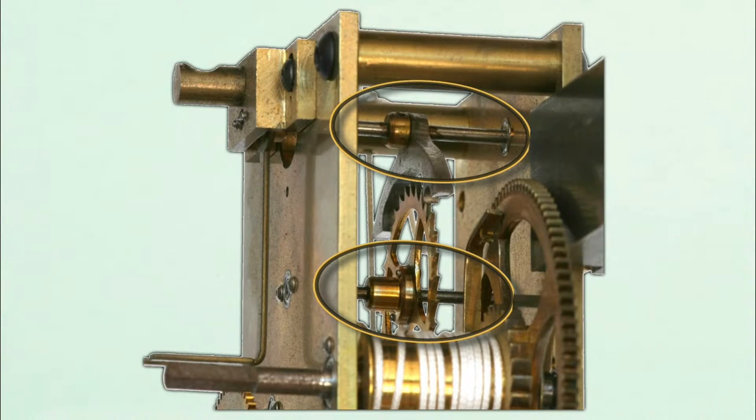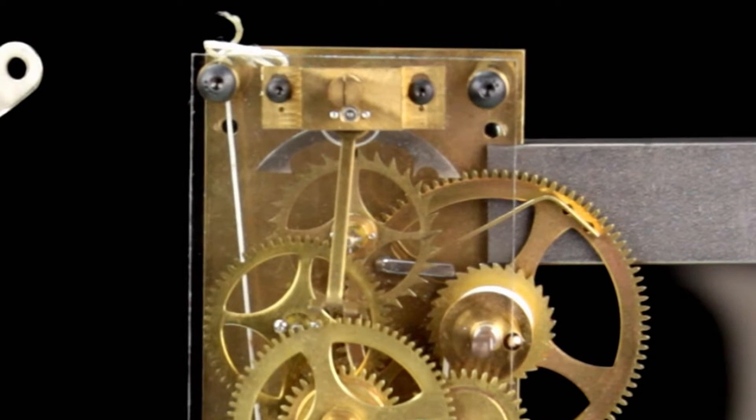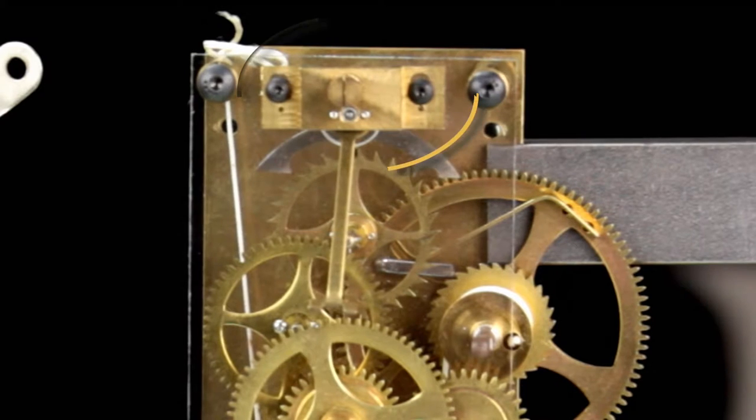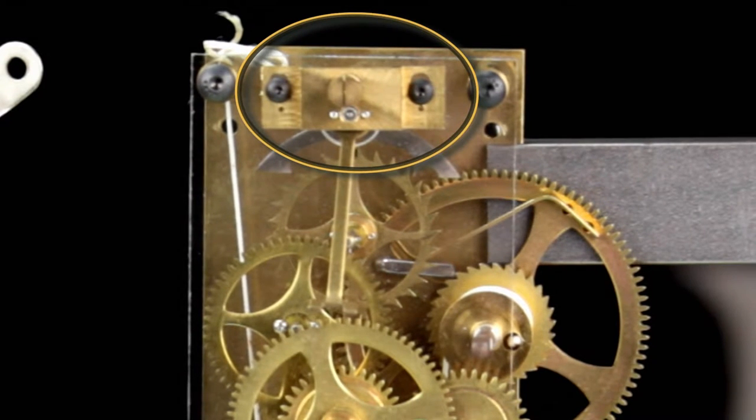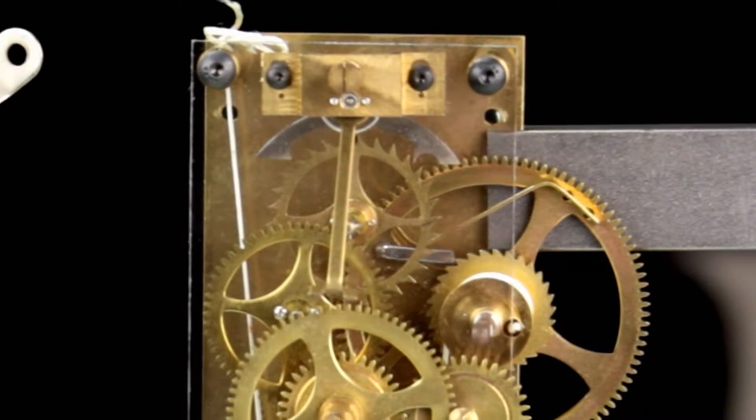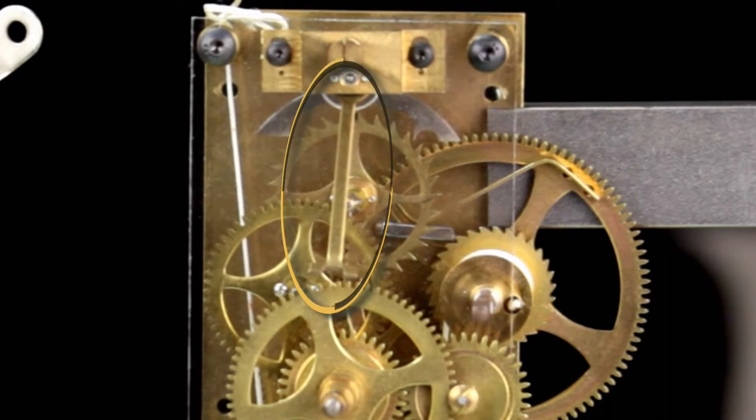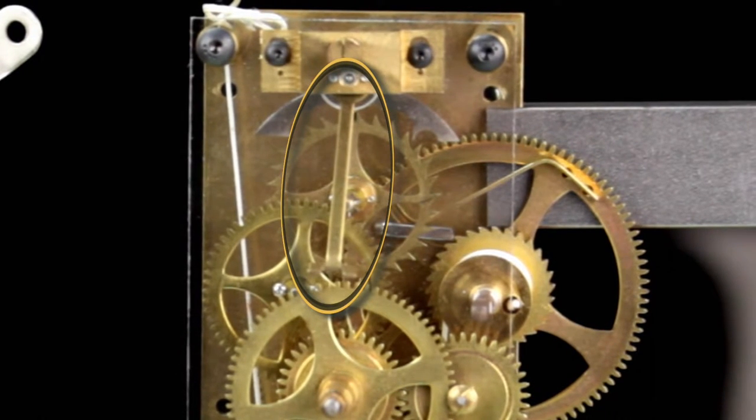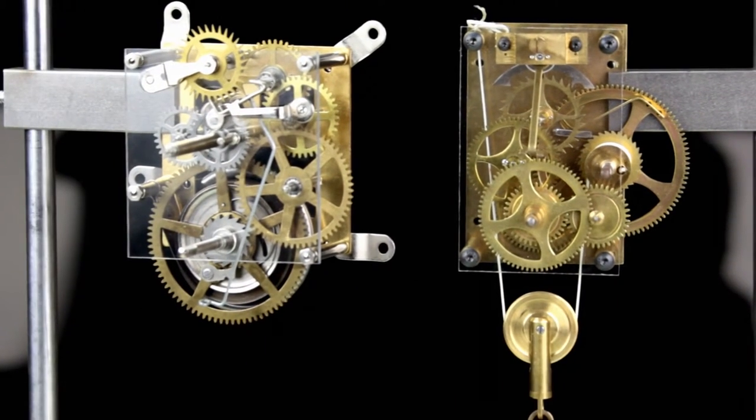The anchor is mounted to an arbor above the escape wheel. There is a bridge instead of a cock to hold one end of the anchor's arbor so the crutch can extend beyond the front or rear plate where it can engage the pendulum rod. Both of these movements have the same major parts and provide the same functions; they're just configured a little differently.